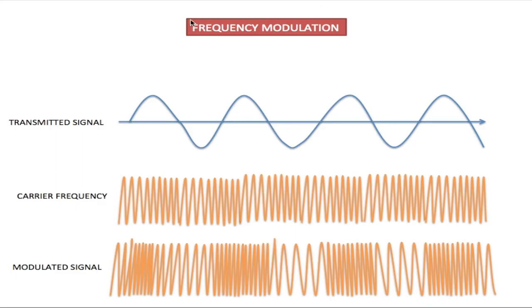Here we're going to talk about frequency modulation. Frequency modulation is used for applications like radar, seismic prospecting, two-way radio systems, and FM radio broadcasting. Using FM radio broadcasting as an example: we have a voice signal multiplexed with a carrier frequency — an FM frequency, as opposed to the AM frequency discussed before. It works similarly, but instead of varying the amplitude of the modulated signal, we vary the frequency. So when the signal is low, the frequency is slower; as the signal goes higher, the frequency increases.